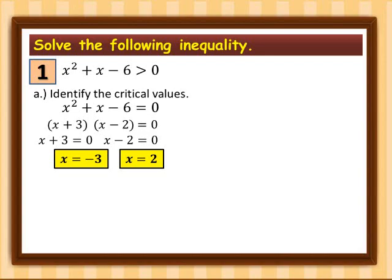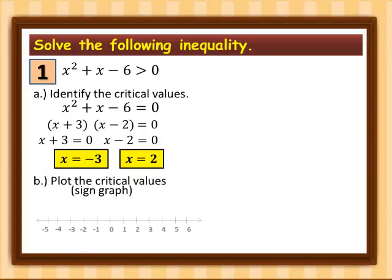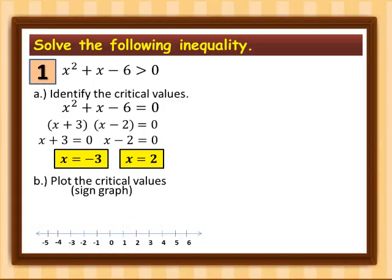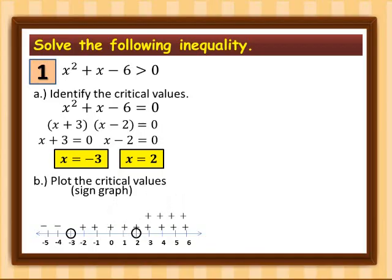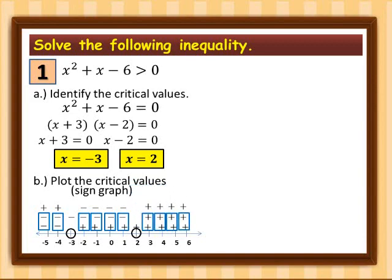Take note — these are not yet the solution of your inequality; these are your critical values. Plot them on your sign graph using a number line. The left of −3 is negative, the right is positive. For +2, the right is positive and the left is negative. Multiplying: negative × negative gives positive on the far left; negative × positive gives negative in the center; positive × positive gives positive on the far right.